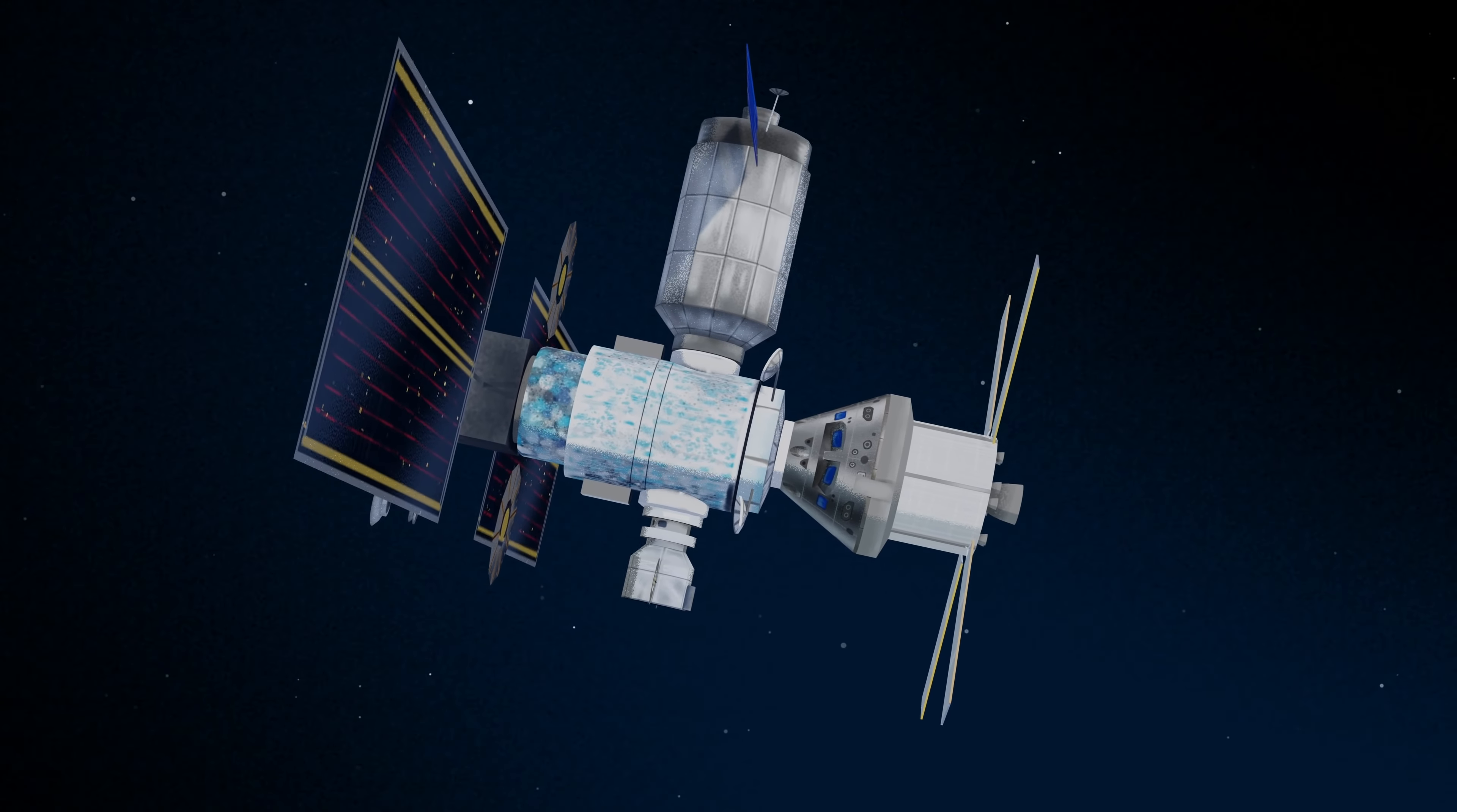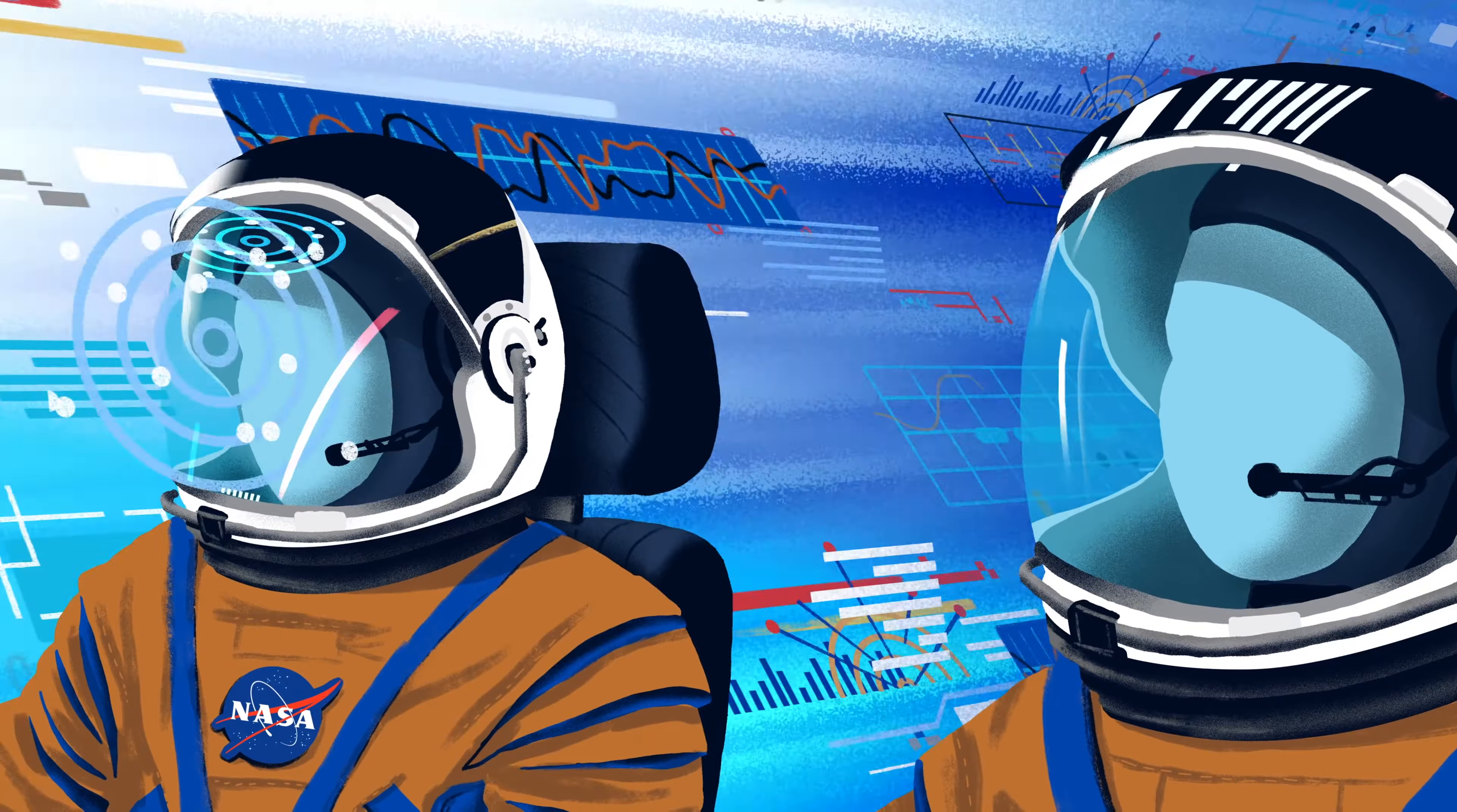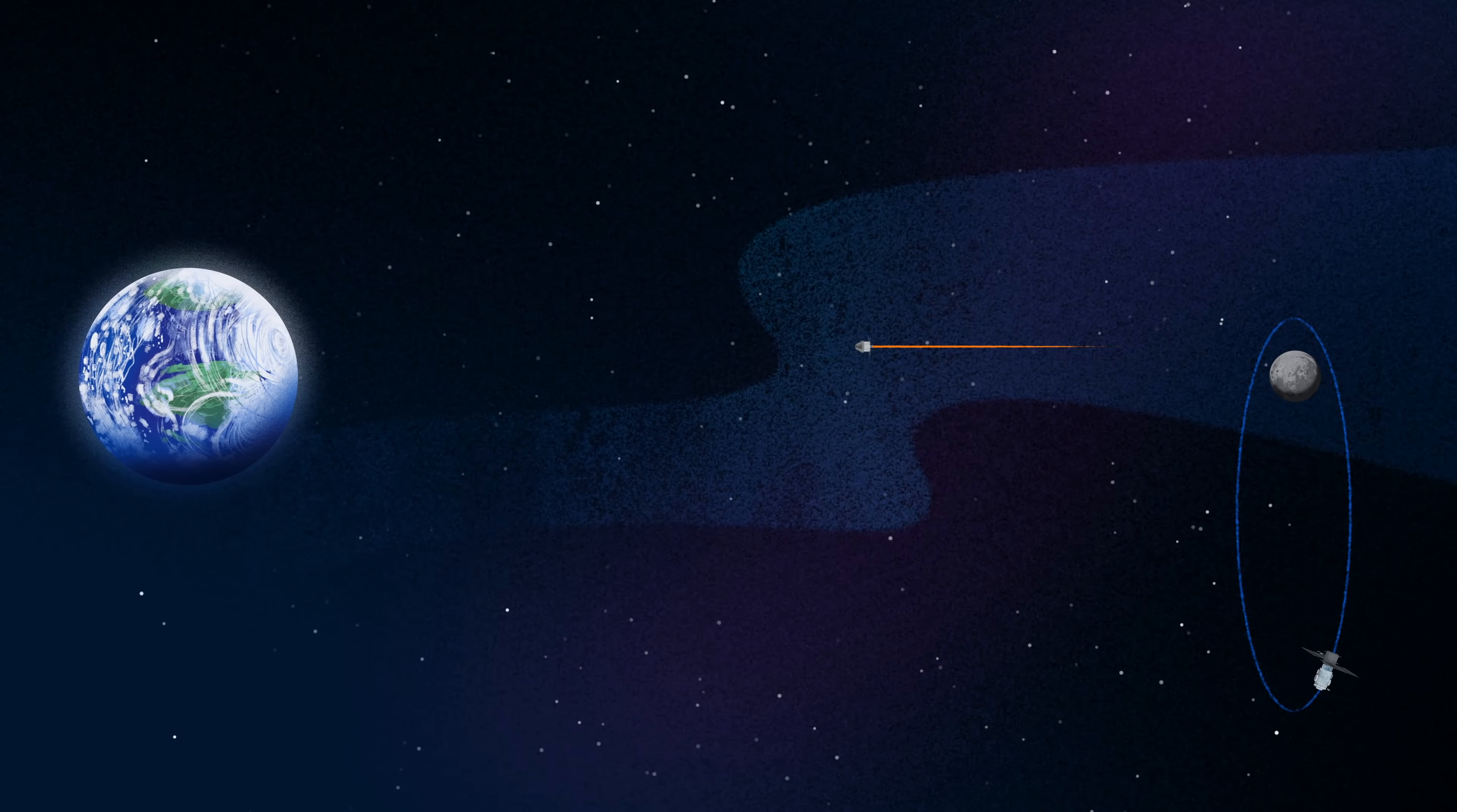Once back aboard the Orion spacecraft and undocked from Gateway, the crew fire their engine once to break out of the halo orbit, and once again to sling the spacecraft around the Moon, placing it on a multi-day trajectory back towards Earth.